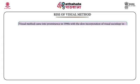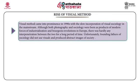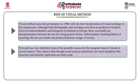Now we discuss the rise of visual method and its evolution over time. Visual method came into prominence in the 1990s with the slow incorporation of visual sociology into the mainstream. Although both photography and sociology were born as products of modern forces of industrialization and bourgeois revolutions in Europe, there was hardly any interpenetration between the two for a long period. Unfortunately, the founding fathers of sociology did not use visuals and produced abstract images of society.